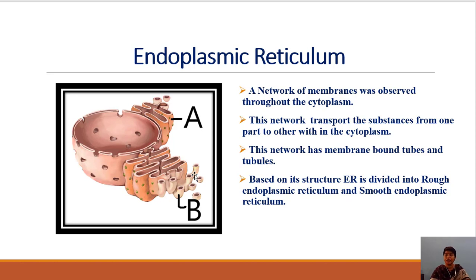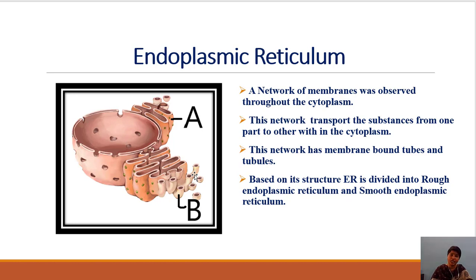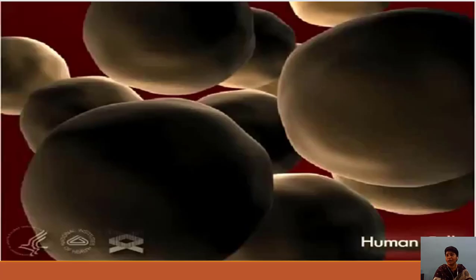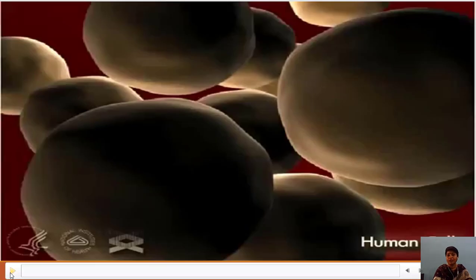Based on its structure, endoplasmic reticulum is divided into two parts: rough endoplasmic reticulum and smooth endoplasmic reticulum. Rough endoplasmic reticulum has structures on its surface making it rough. Smooth endoplasmic reticulum has a smooth surface. Now I will show you videos of rough and smooth endoplasmic reticulum — observe carefully.